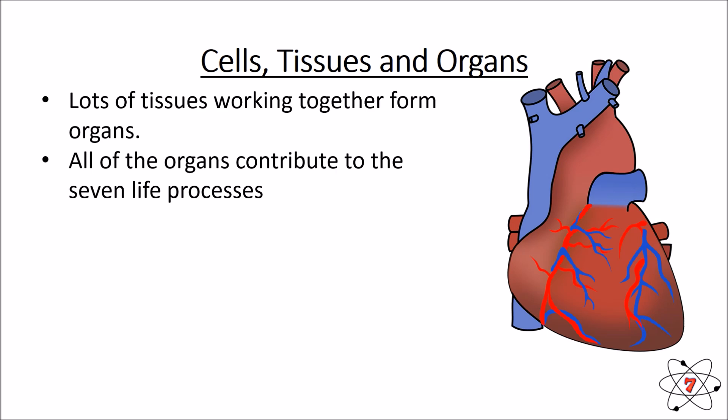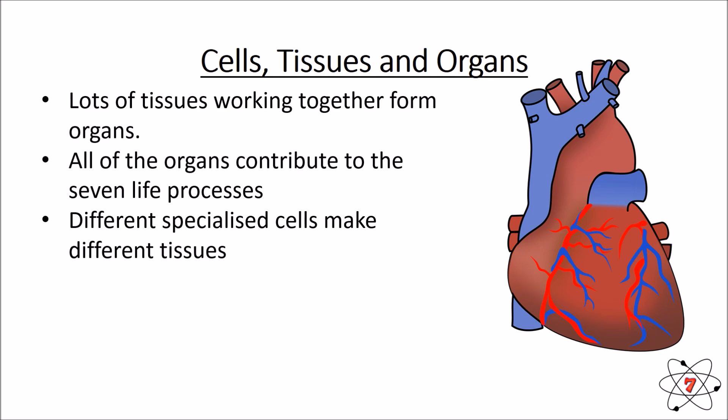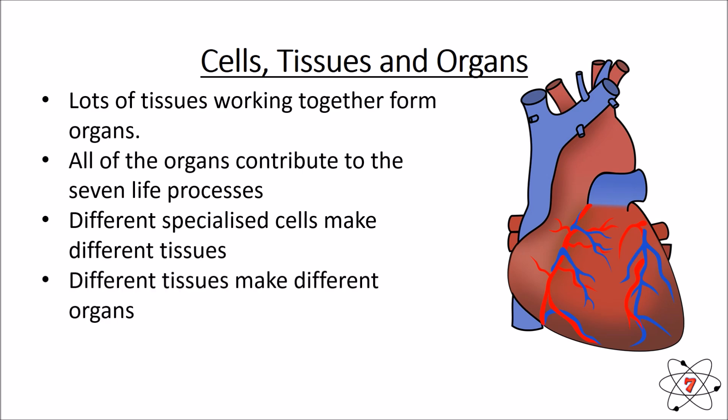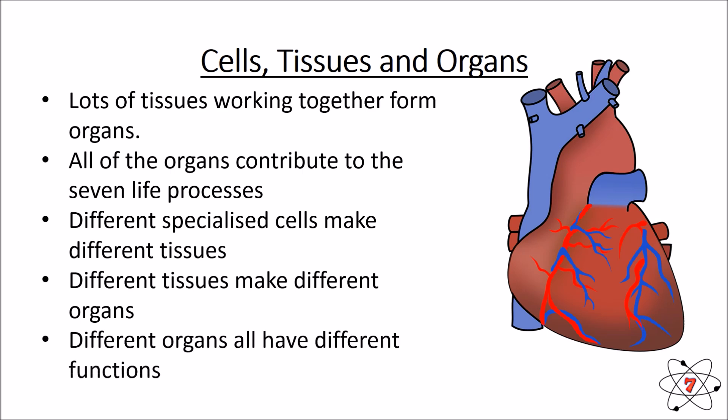All of the organs in our body help to contribute to our seven life processes. Each organ is made up of different specialized cells, and different tissues make different organs. The tissues in your liver are completely different to the tissues in your heart.